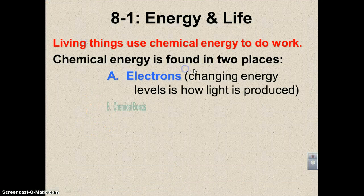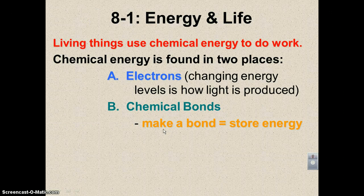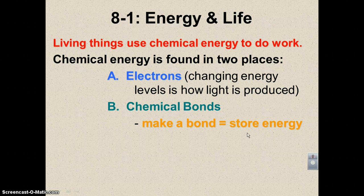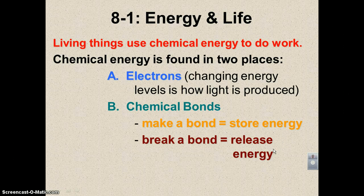The second place chemical energy is stored is in chemical bonds. From chapter two, when we talked about endothermic and exothermic reactions — when you make a chemical bond, that stores energy; that would be an anabolic process, also called an endergonic process. When you break a bond, you release energy; this would be a catabolic reaction, also referred to as exergonic.